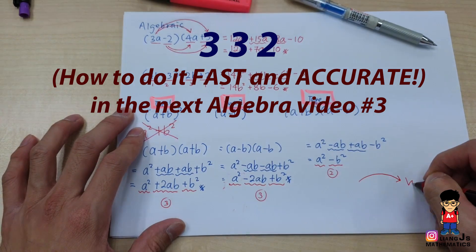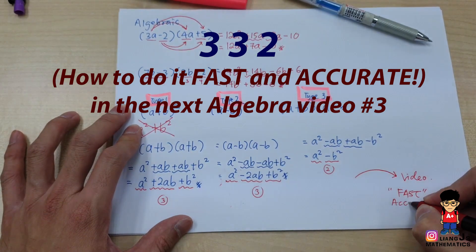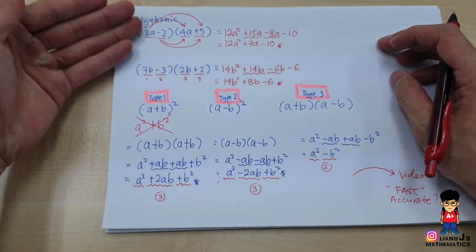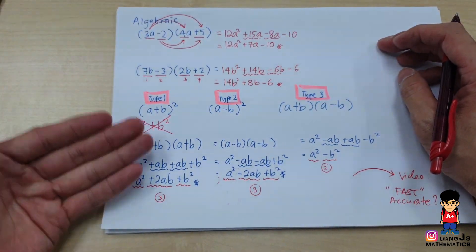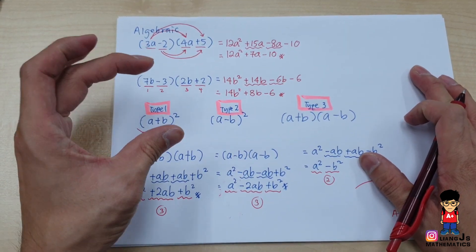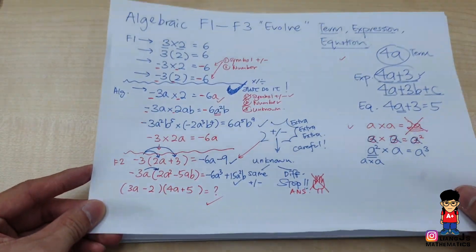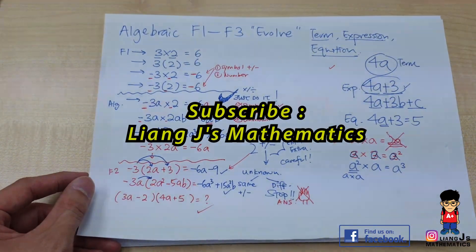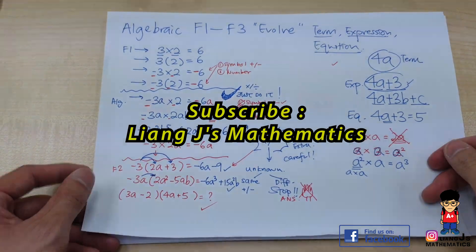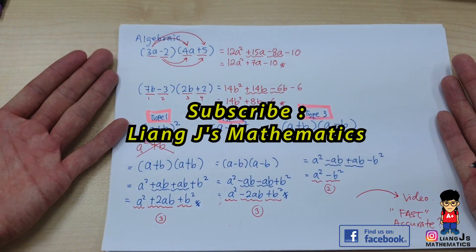In the next video I'll talk about how to do these fast and accurately. These were the baby steps for Form 2 expanding — slightly more advanced. If you're not sure about the basics, go back to the previous video covering Form 1 to Form 3 algebraic ideas. If you like this video, share it and subscribe for more videos.